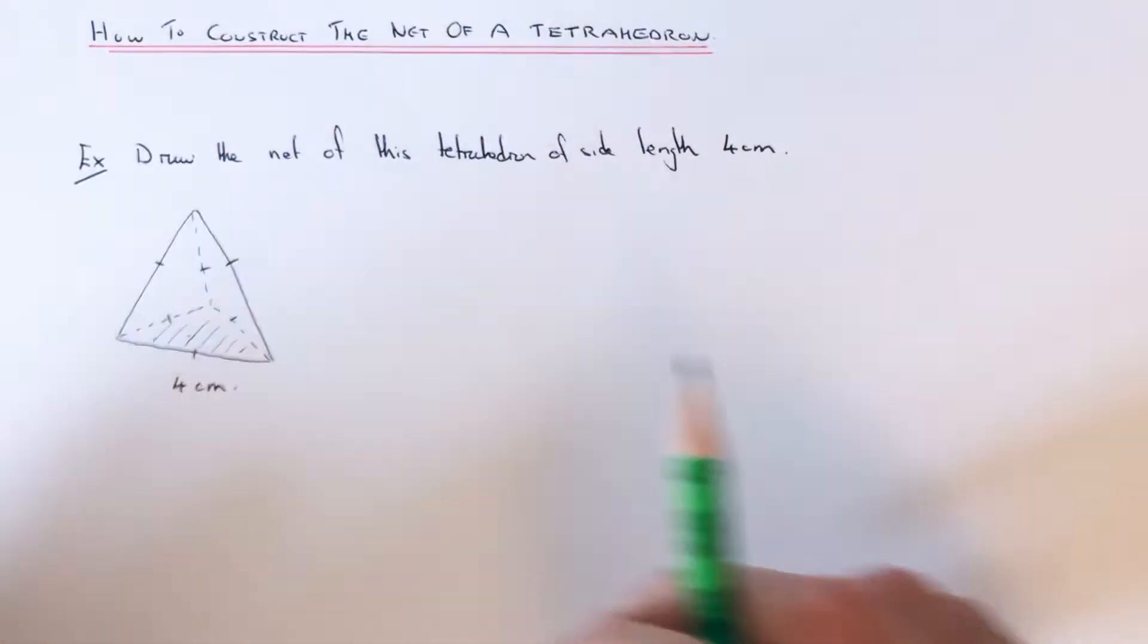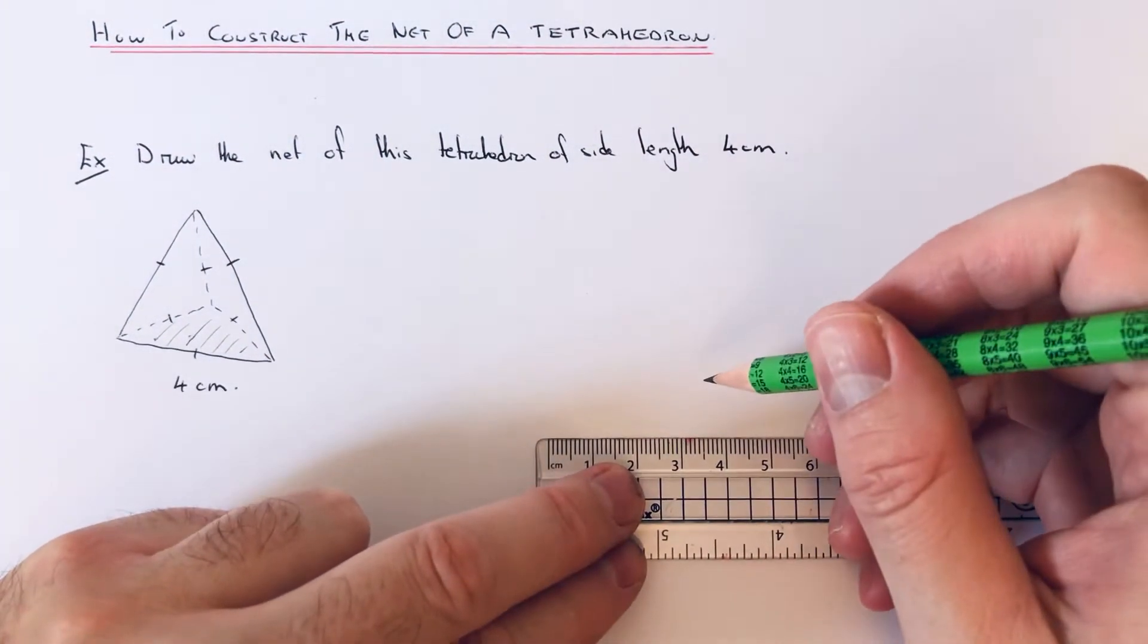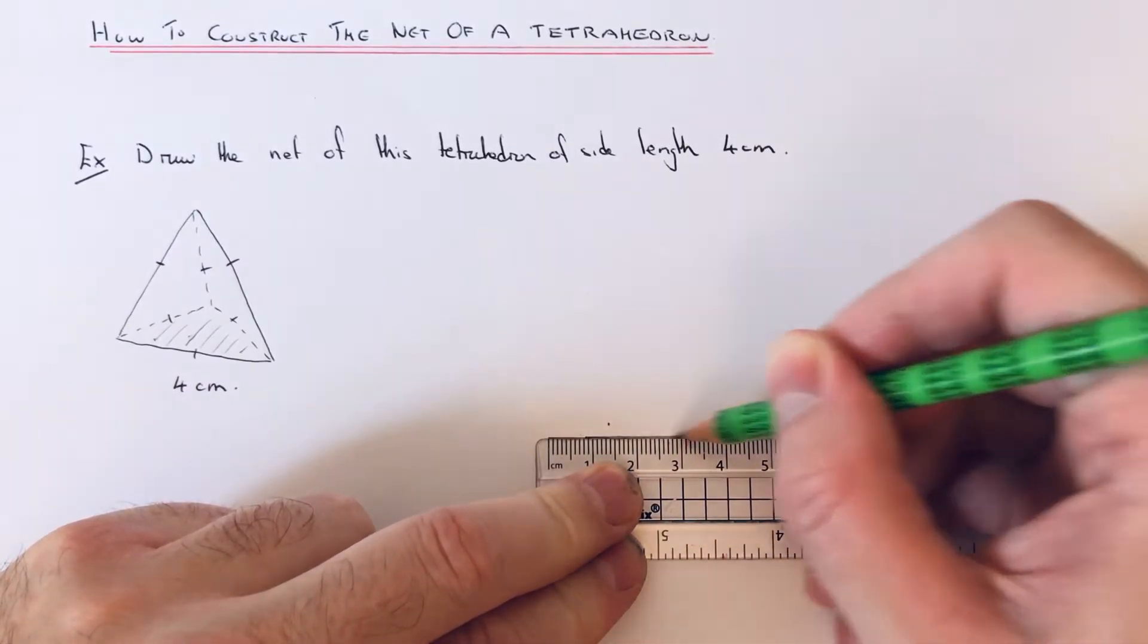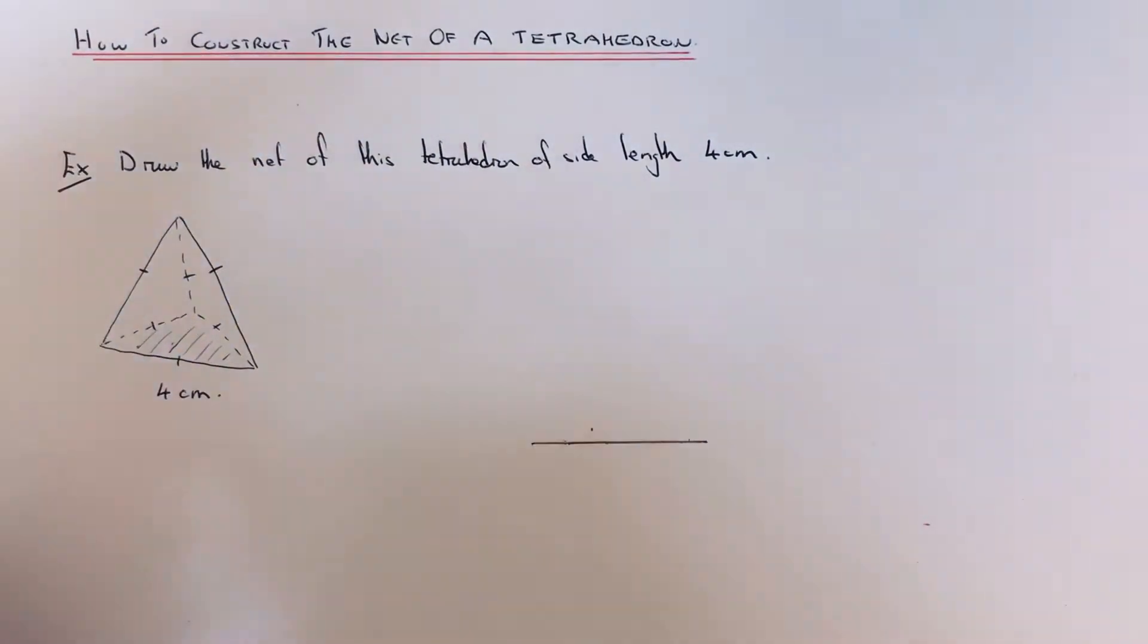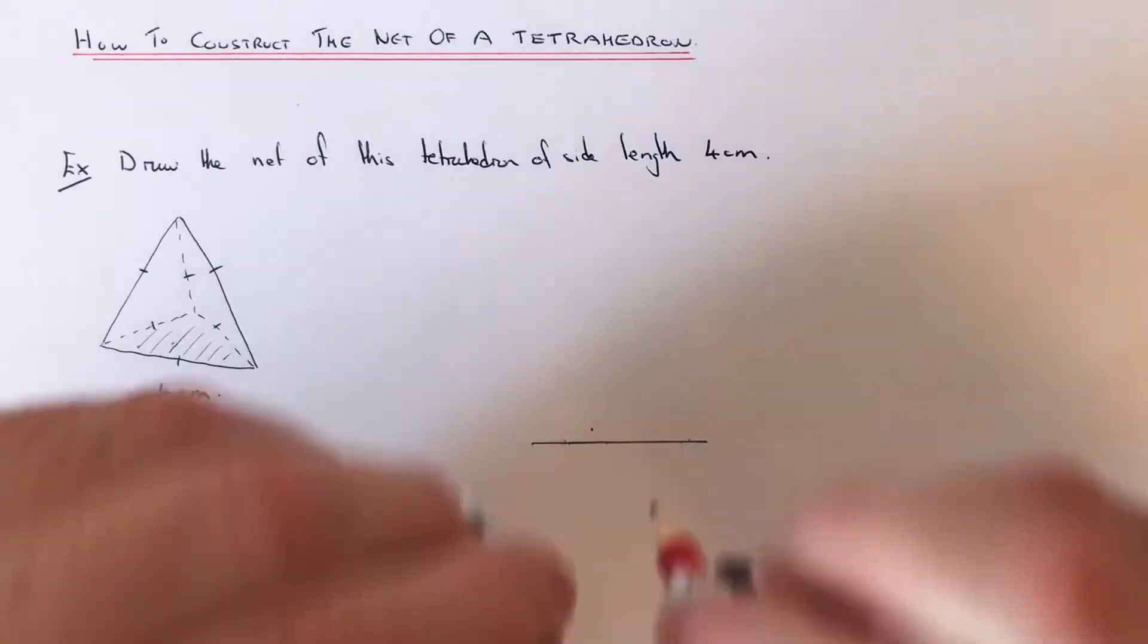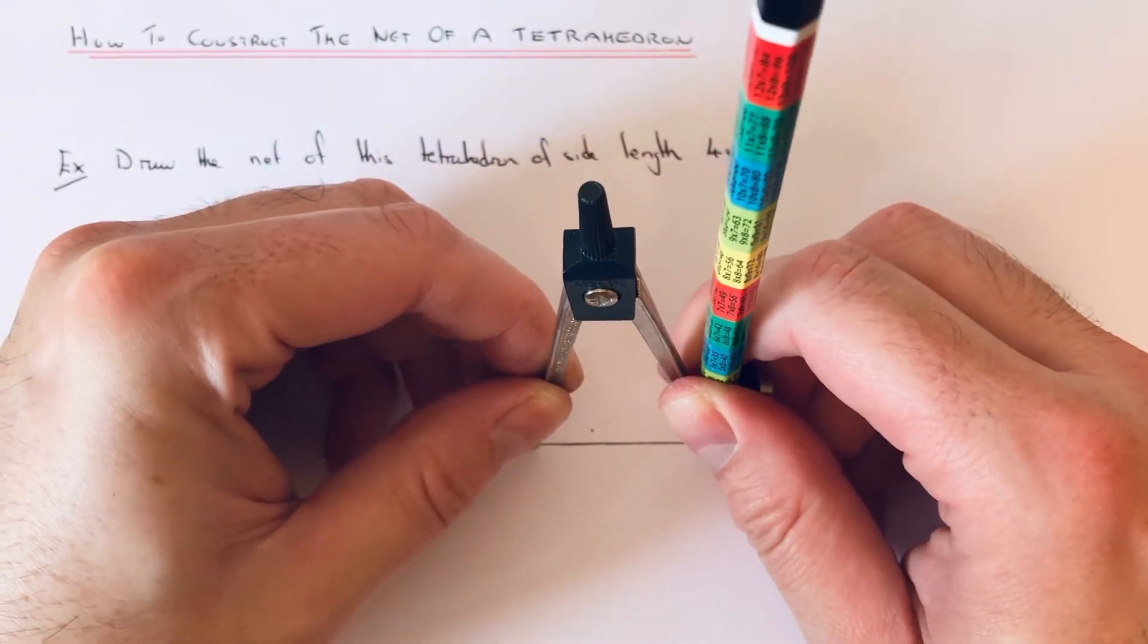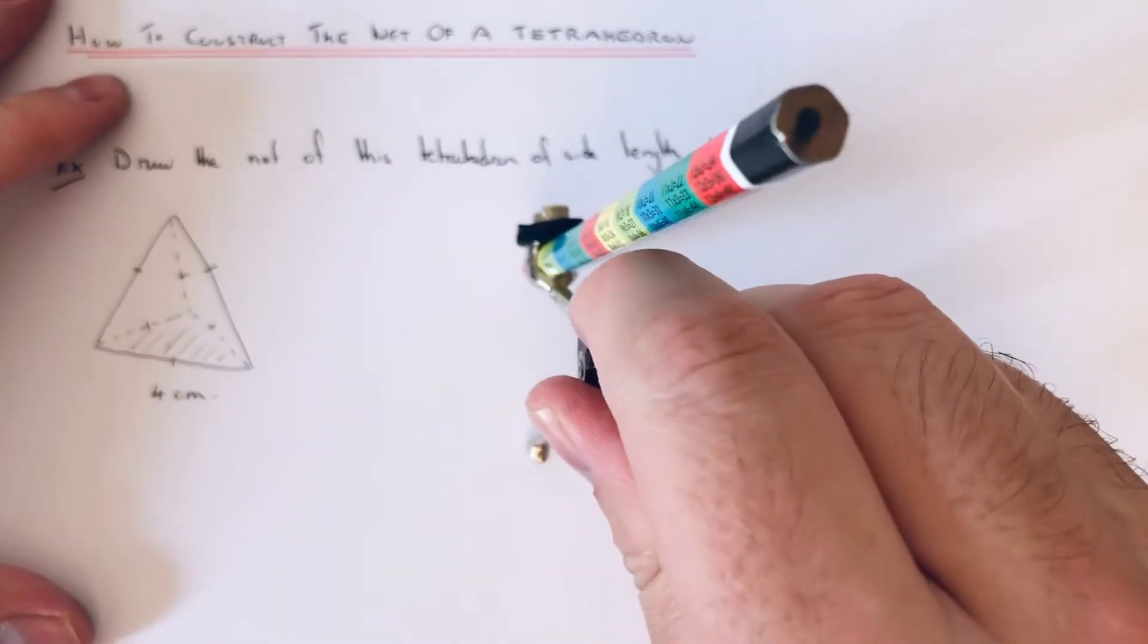Let's put that there. If we do the front edge which is four, and then to get the other edges, open your compass out to the full length of the line. We need to do two arcs above that bottom line.